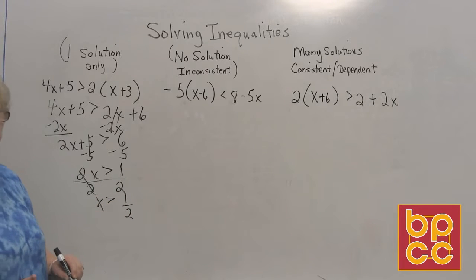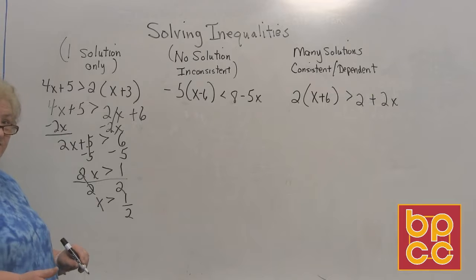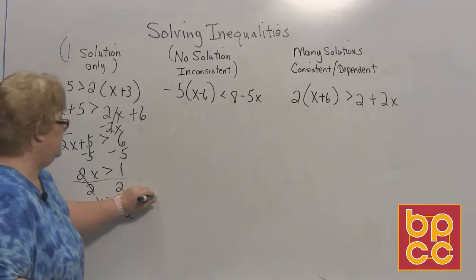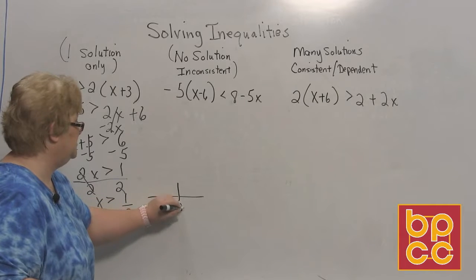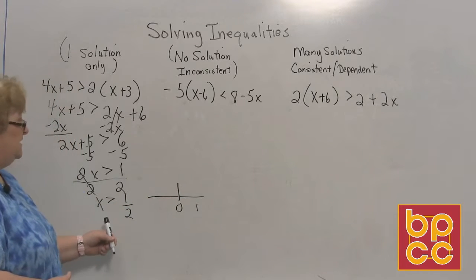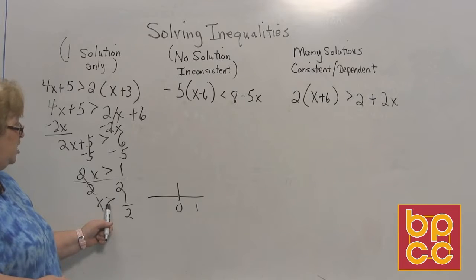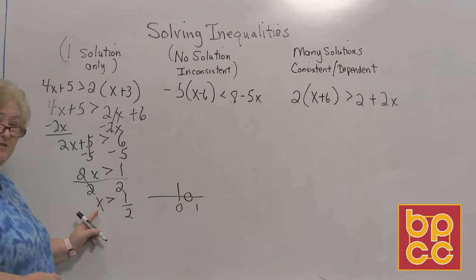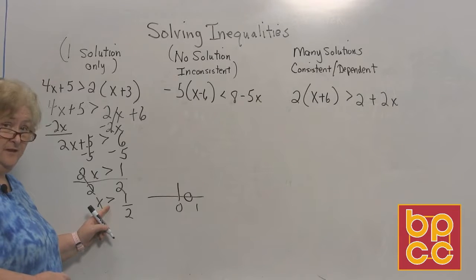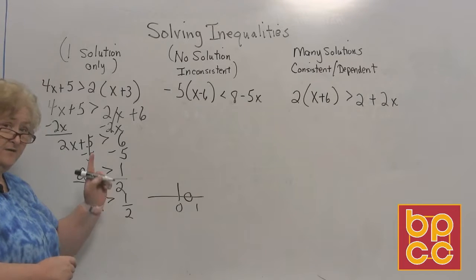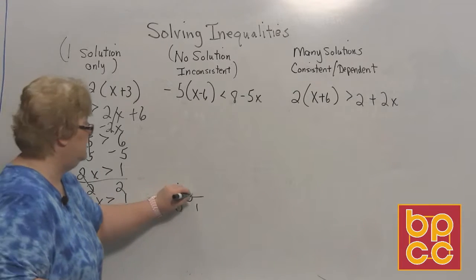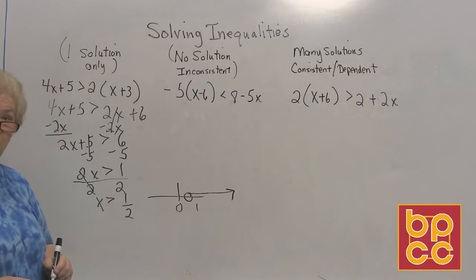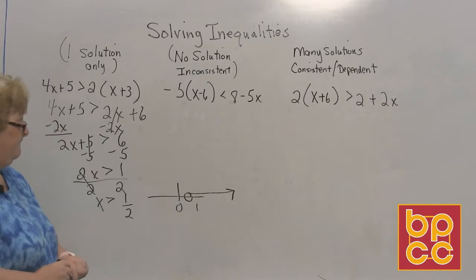Now if it asks you to graph it on the number line, we can do that. There is one answer and the only answer is this answer. So if we were going to do a number line and this is 0 and 1, then I would go between 0 and 1 with an open circle. And look at x, x is greater than 1 half. So greater than on the number line goes to the right. So this would be a picture of this inequality when asked to graph it. Alright, now let's move to our next one.